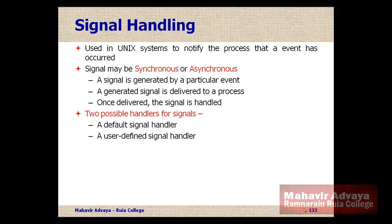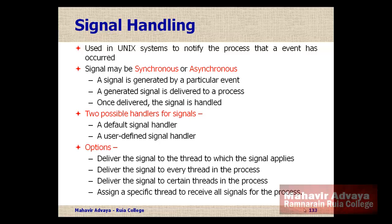For example, moving the mouse triggers no default operation, but double-clicking an icon invokes a signal handler. User-defined signal handlers operate on user input. The options for handling signals include: delivering the signal to the thread to which it applies, or delivering the signal to every thread in the process.